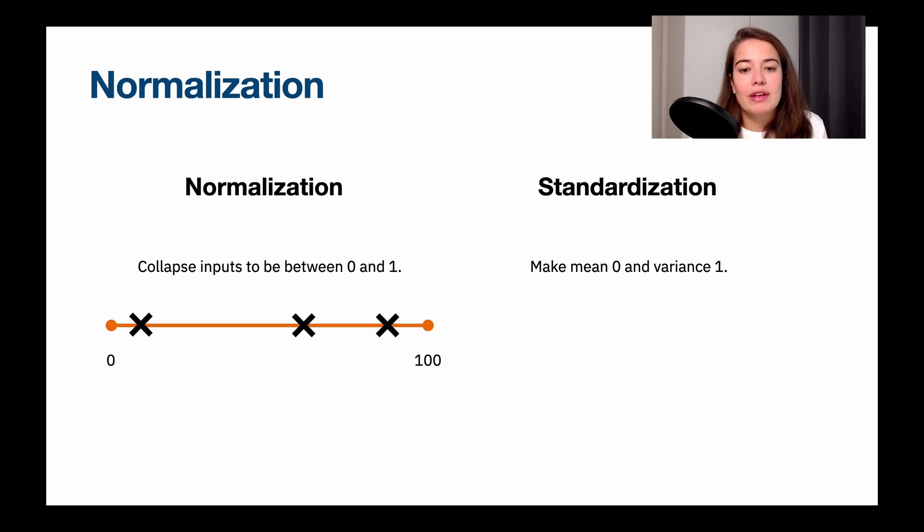So let's look at a small brief example. If we have three numbers that go from zero to 100, let's say the first one is five, we have 75 and 98, then we would have to shrink them and scale them down so that they are between zero and one, but they will keep the relationship that they have to each other.